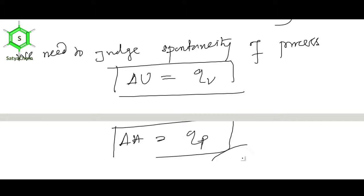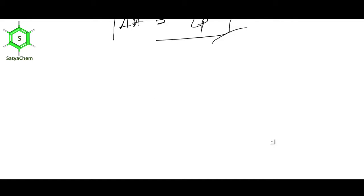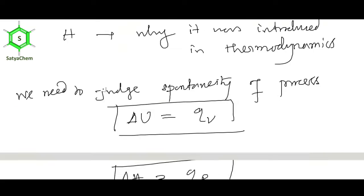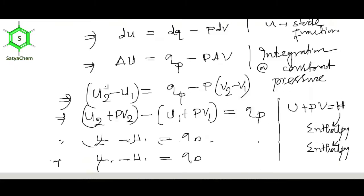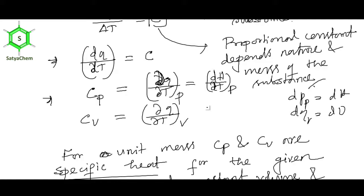Now I will derive the relation between Cp and Cv. We know Cp = (∂qp/∂T) = (∂H/∂T)p and Cv = (∂qv/∂T) = (∂U/∂T)v. Starting from H = U + PV, differentiating: Cp = (∂U/∂T)p + P·(∂V/∂T)p.